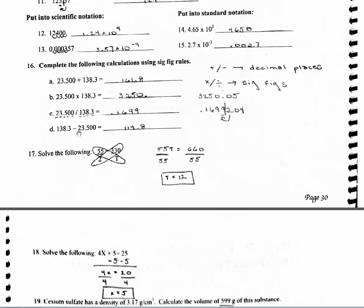For problem D, since I'm subtracting, it's based on decimal places. You get your answer — this is actually what you get in your calculator. Make sure you don't need to add any zeros. Since this has one decimal place and that has three, you're actually good to go because you want just one decimal place.